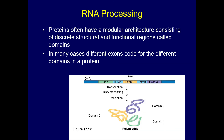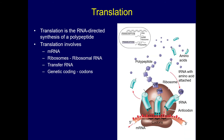Proteins often have a modular architecture consisting of discrete structure and function — a protein folds and bends in a certain way, and that's how it functions. Translation is when RNA creates a polypeptide, which is a protein. Translation involves the RNA made from DNA, ribosomes, transfer RNA, and codons.